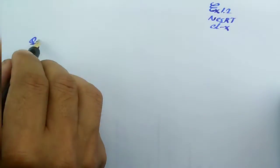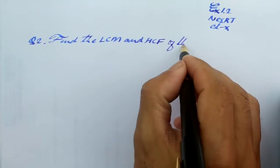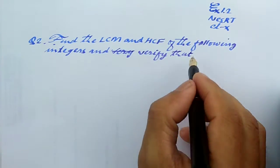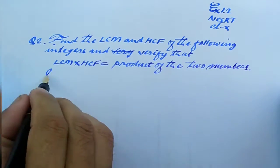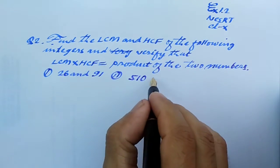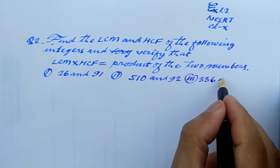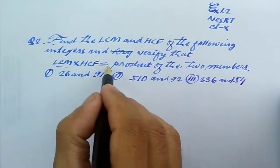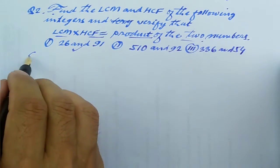Now let us come to question number 2: find the LCM and HCF of the following pairs of integers and verify that LCM into HCF equals the product of the two numbers. Roman numeral 1: 26 and 91. Roman numeral 2: 510 and 92. Roman numeral 3: 336 and 54. We are going to verify that LCM into HCF equals the product of the two numbers.